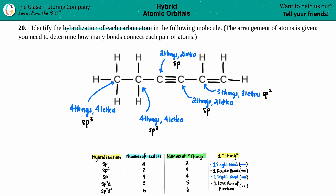And for the final carbon: a double bond - that's one thing, one single bond - two things, another single bond - three things. Three things, three letters: sp2. And we are done with this problem!